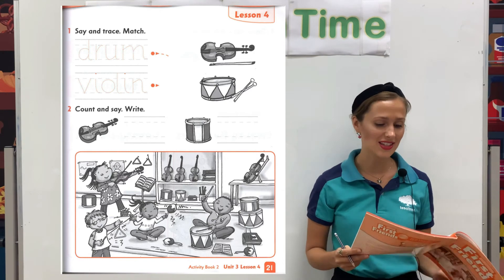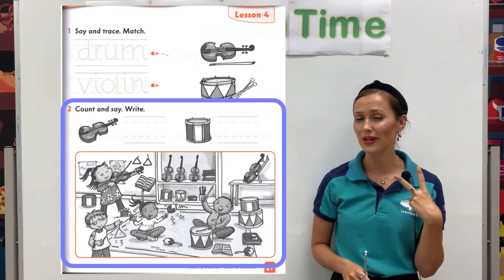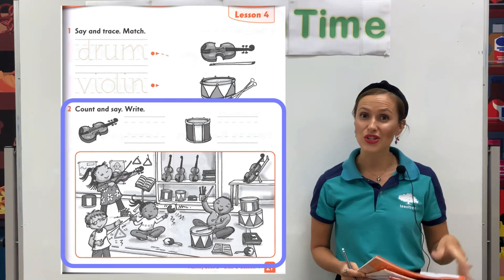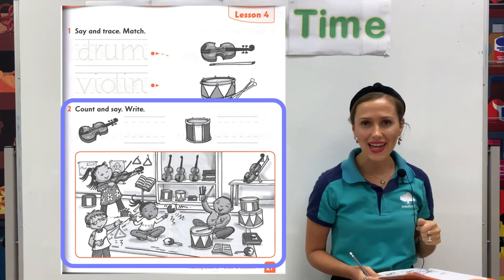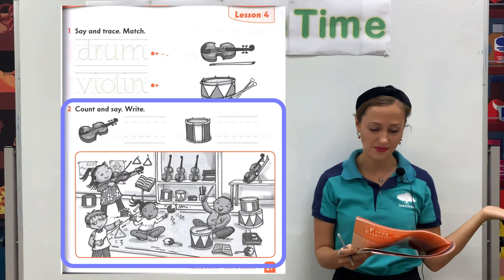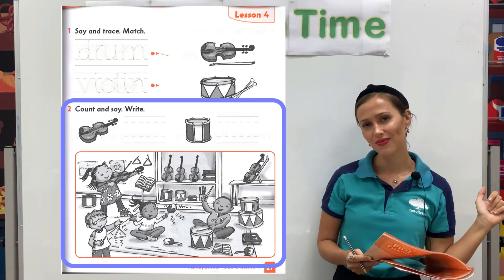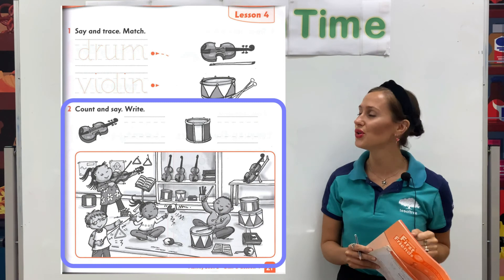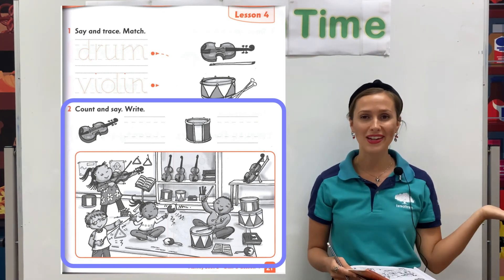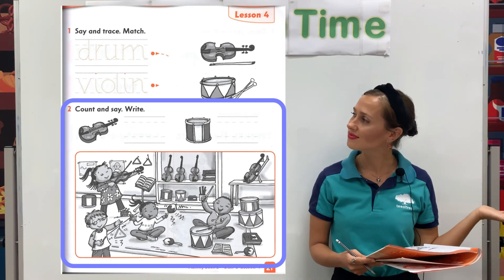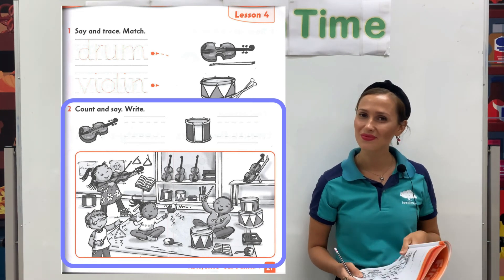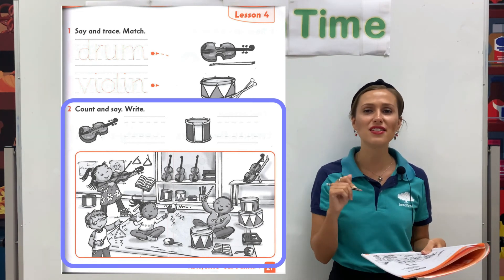If you are finished with section 1, it is time for number 2. I want you to look at the picture. Can you count how many violins do you see? I want you to count. Then, how many drums do you see? I want you to count. And write the correct number.